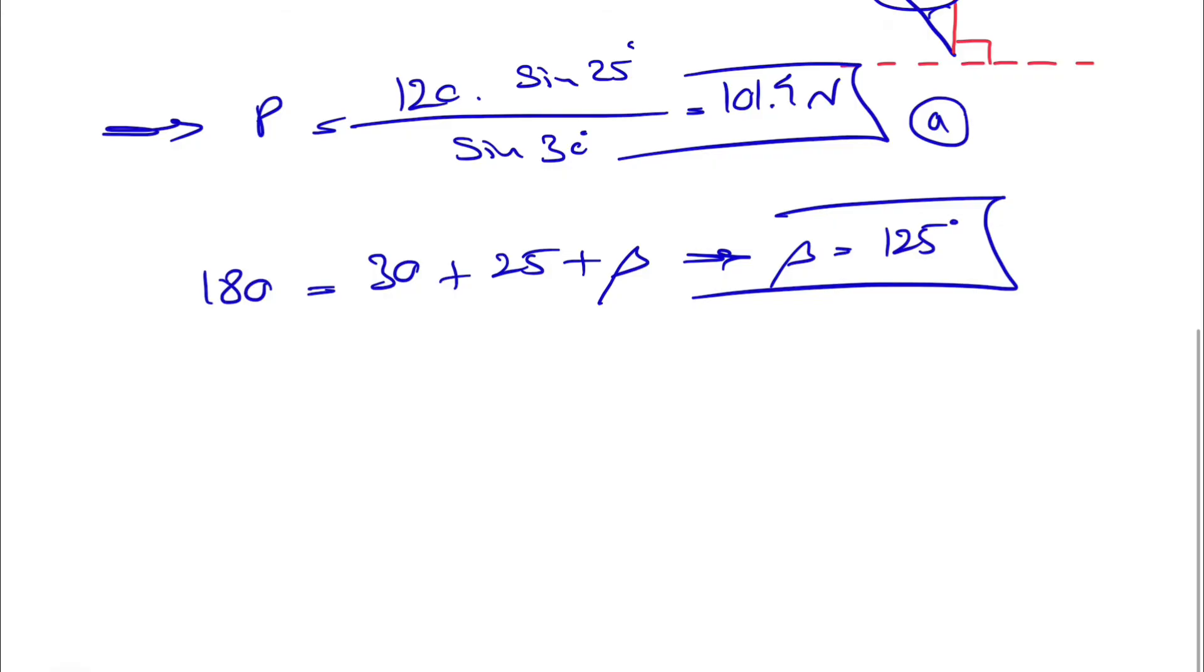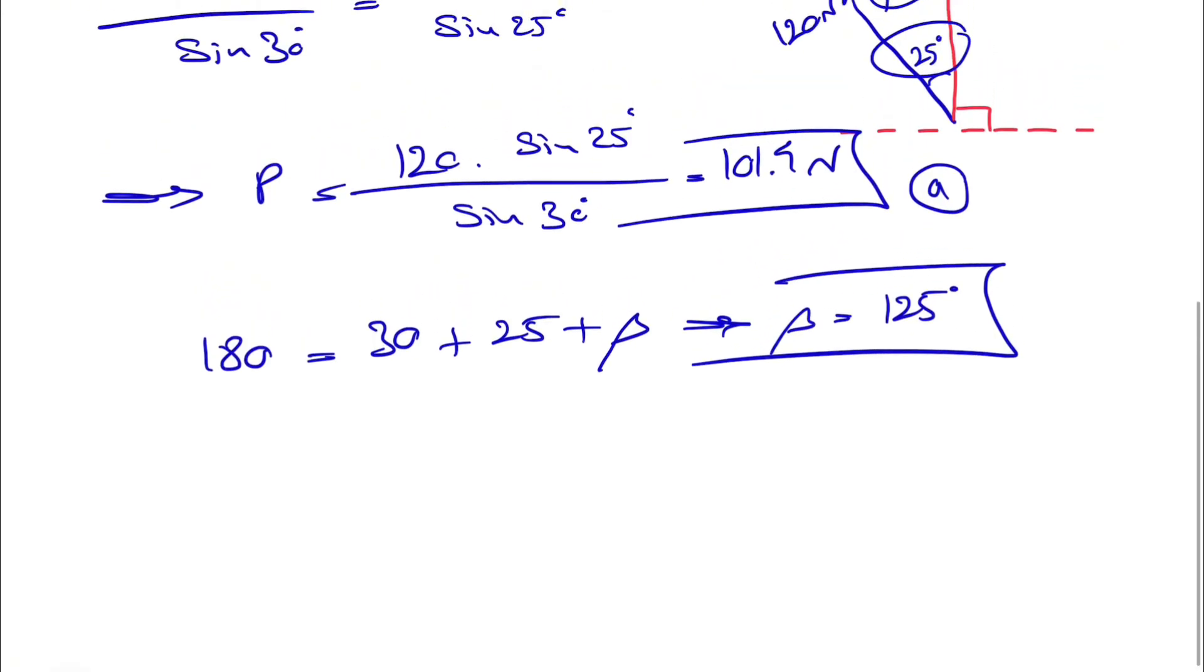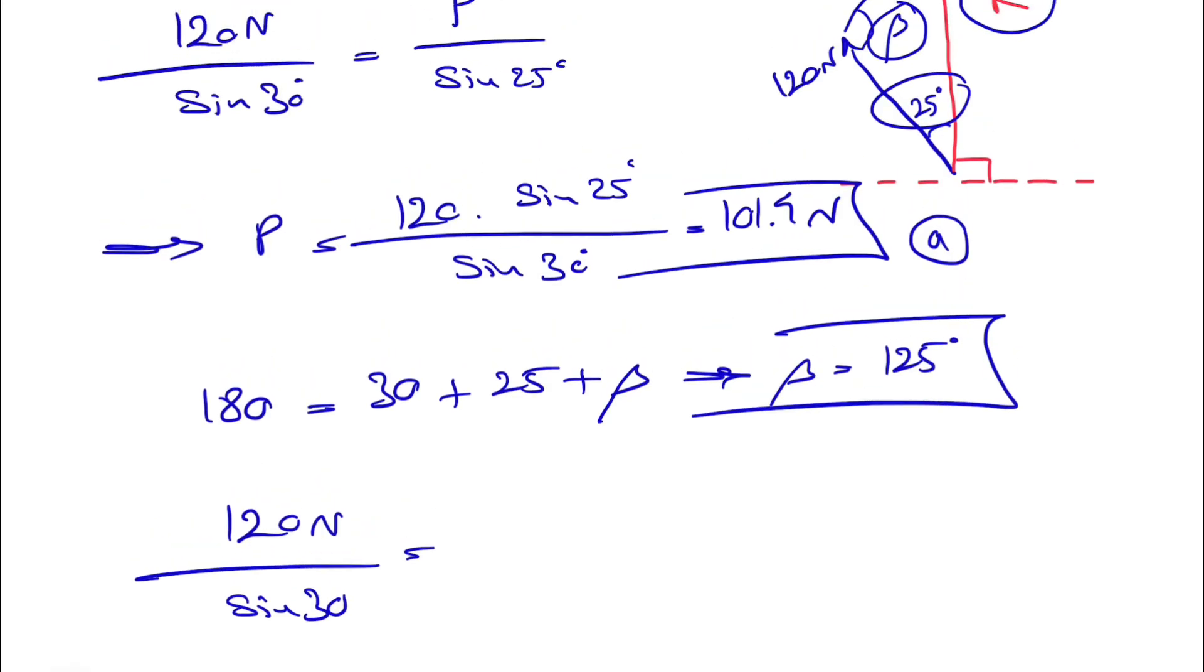Everything's good. Now we can just do our law of sines in here again. Let's go with the 120, so 120 Newton divided by sine of 30, we can also use P over sine of 25. Now that we have P, on the other side we'll have R over sine of beta, which we know is 125 degrees.